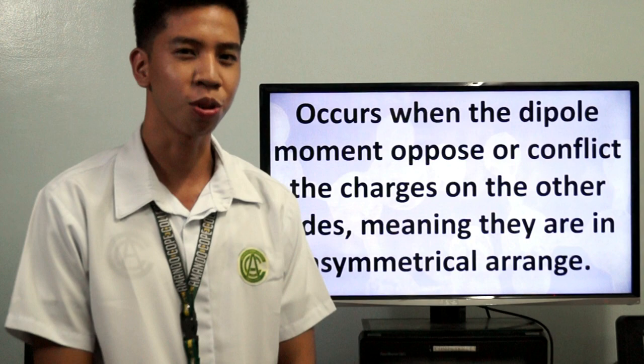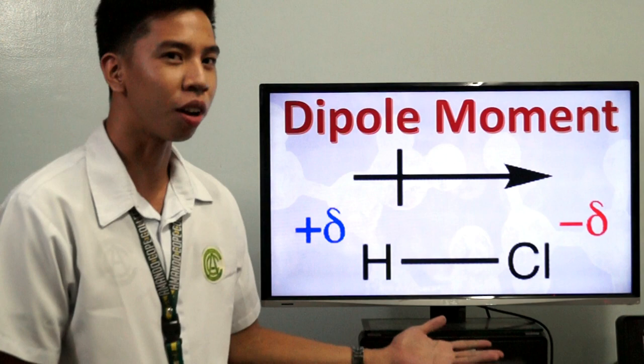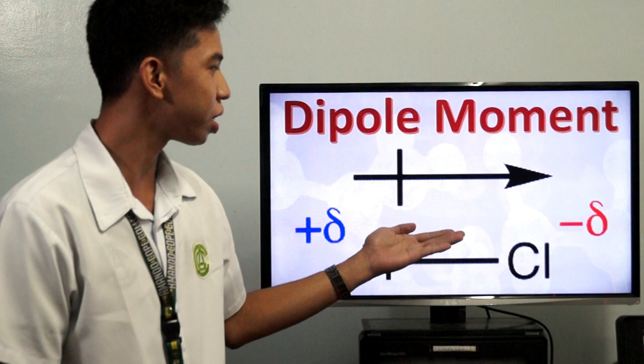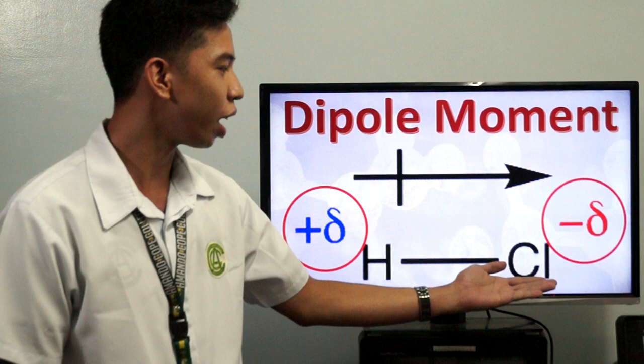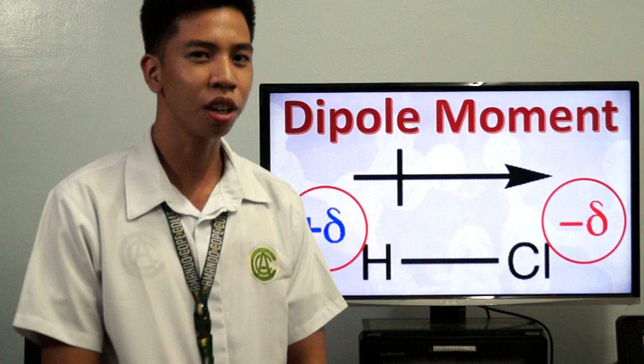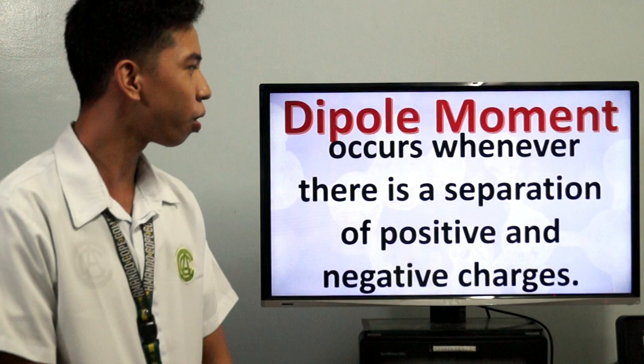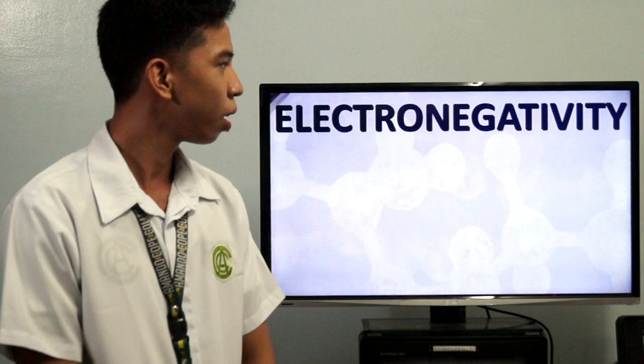For those who don't know what dipole moment is, let's take this example where hydrogen and chlorine are the elements present. Using a symbol with an arrow — like a cross — this shows the transfer of partially positive charges of hydrogen to partially negative charges of chlorine, because chlorine has a greater electronegativity than hydrogen. Dipole moment occurs whenever there is a separation of positive and negative charges.